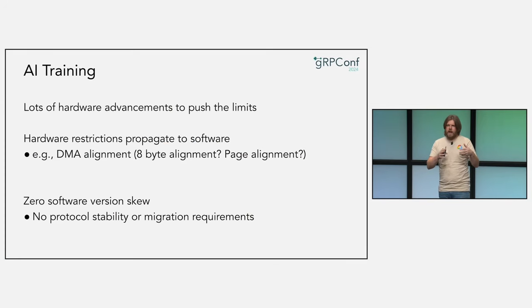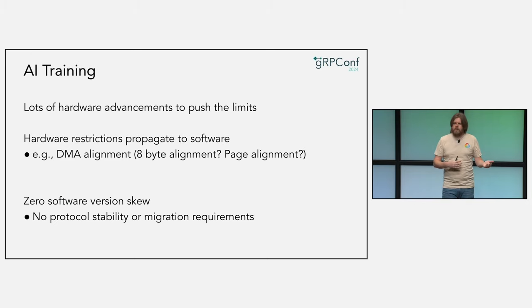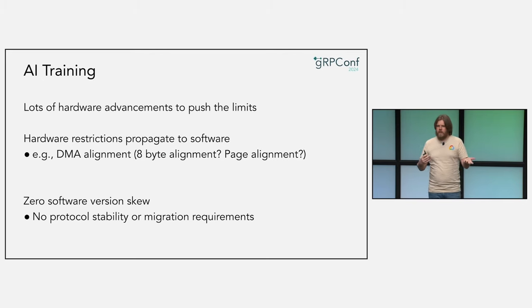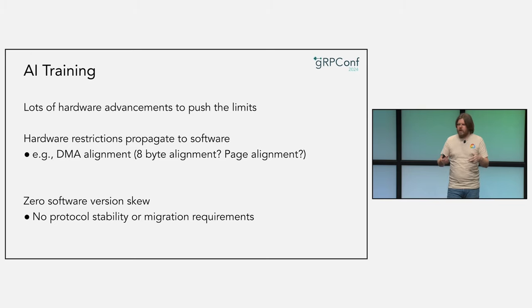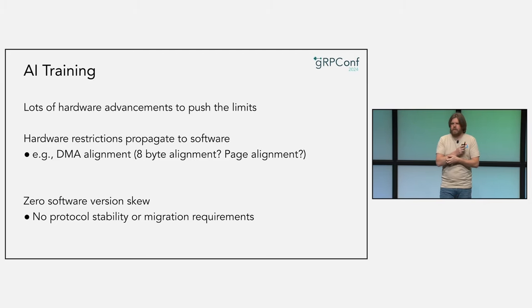There's also zero software version skew, which is a saving grace. Normally all those demands are very demanding, but here we have a nice saving grace. We're still supporting gRPC 1.0 — not actively updating it, but ancient clients can still talk to new servers. In this AI training case, software isn't sitting there bit-rotting; it's updated very rapidly, so there's either zero or very little version skew. That means protocol stability doesn't matter as much here, whereas classically that's something very important to gRPC.